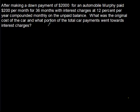Our last problem reads: after making a down payment of $2,000 for an automobile, Murphy paid $200 per month for 36 months with interest at 12% per year compounded monthly on the unpaid balance. What was the original cost of the car, and what portion of the total payments went toward interest? This problem has multiple steps and uses a different formula — the present value formula — because we're looking at what's happening right now.